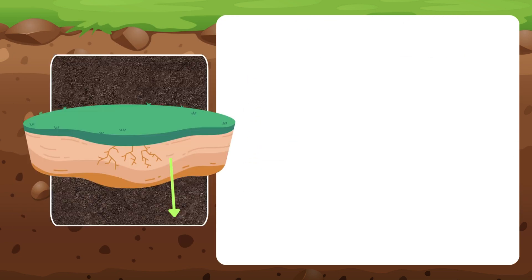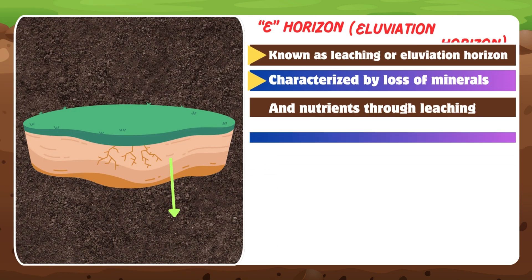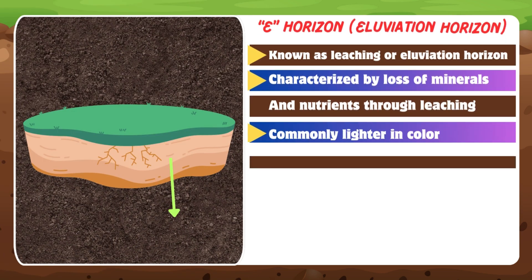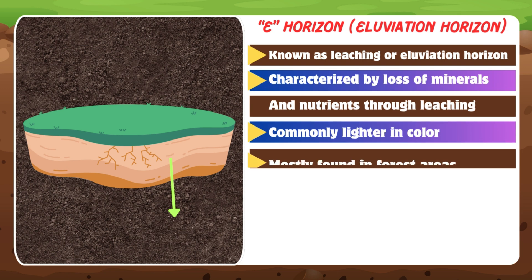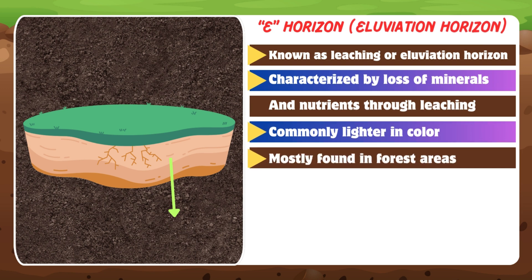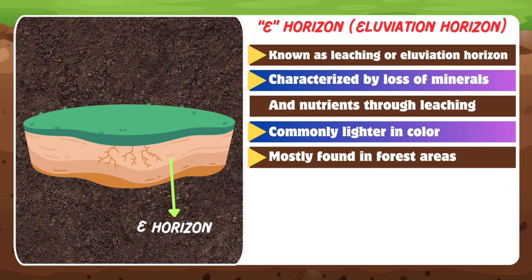E horizon — this layer is also known as the leaching or eluviation horizon. It is characterized by the loss of minerals and nutrients through leaching. It is commonly lighter in color and may be present in some soil profiles. This horizon is mostly found in forest areas.